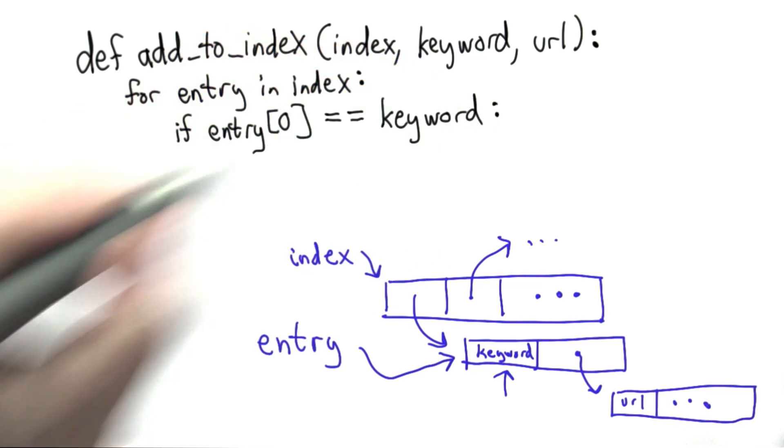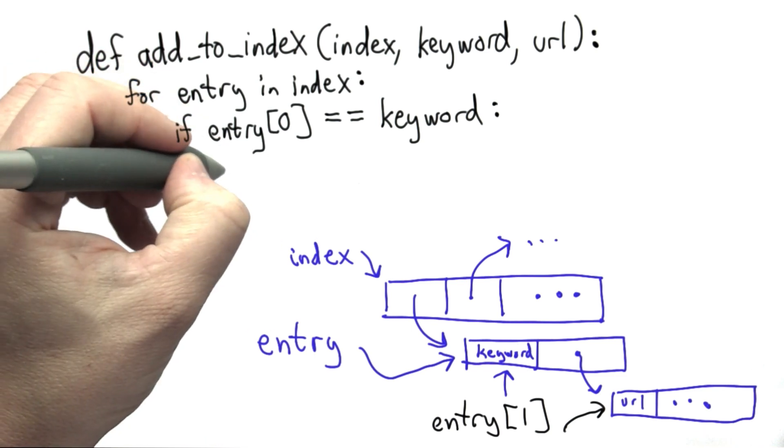This means we want to append the URL to the list of URLs associated with that entry. To get that list of URLs, we want to find entry one. That's the value at position one of entry. And we want to append to that the new URL.